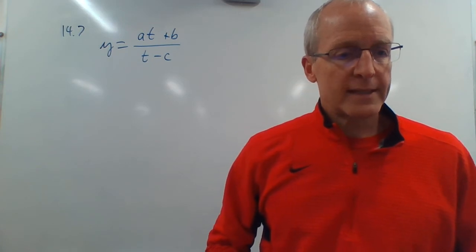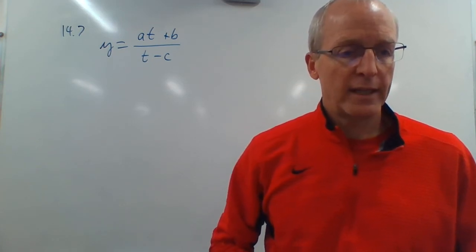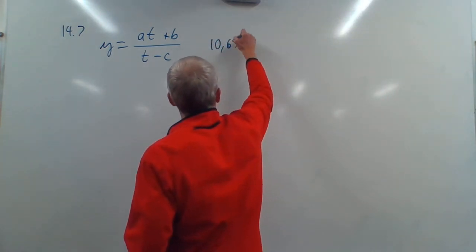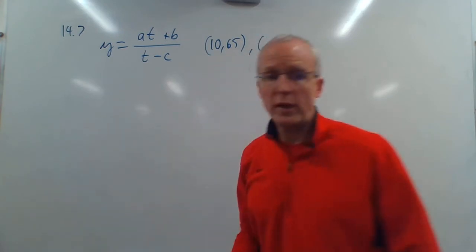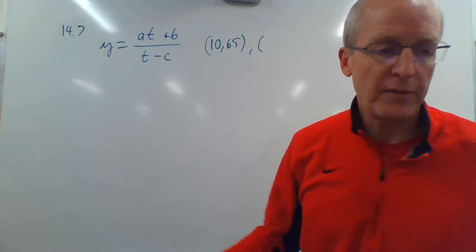If you study for 10 hours, your score will be 65%. Okay, so score is like the Y. That's what you get. Time is like the X. So we'll use a T here instead of X. They say if we study for 10 hours, that's T equals 10, we get a 65%. So 10 comma 65 is one point. And then they tell us another point. If we study for 20 hours, you'll get a 95%.